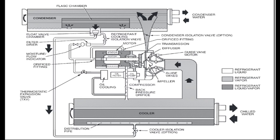Oil is charged into the lubrication system through a hand valve. Two side glasses in the oil reservoir permit oil level observation. Normal oil level is between the middle of the upper side glass and the top of the lower side glass when the compressor is shut down. During operation, the oil level should be visible in at least one of the two side glasses. Oil sump temperature is displayed on the CVC/iCVC chiller visual controller default screen; during compressor operation, the oil sump temperature ranges between 125–150°F (52–66°C).